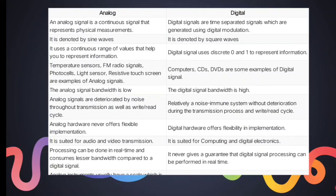Analog signal bandwidth is low while digital signal bandwidth is high. Analog signals are easily damaged by noise during transmission and in the read-write process, whereas digital systems are noise-immune without deterioration during transmission or read-write cycles. Analog hardware never offers flexible implementation, whereas digital hardware is always flexible. Analog is suited for audio and video transmission; digital is suited for computing and digital electronics. Analog instruments are prone to observational errors, while digital instruments never cause observational errors.